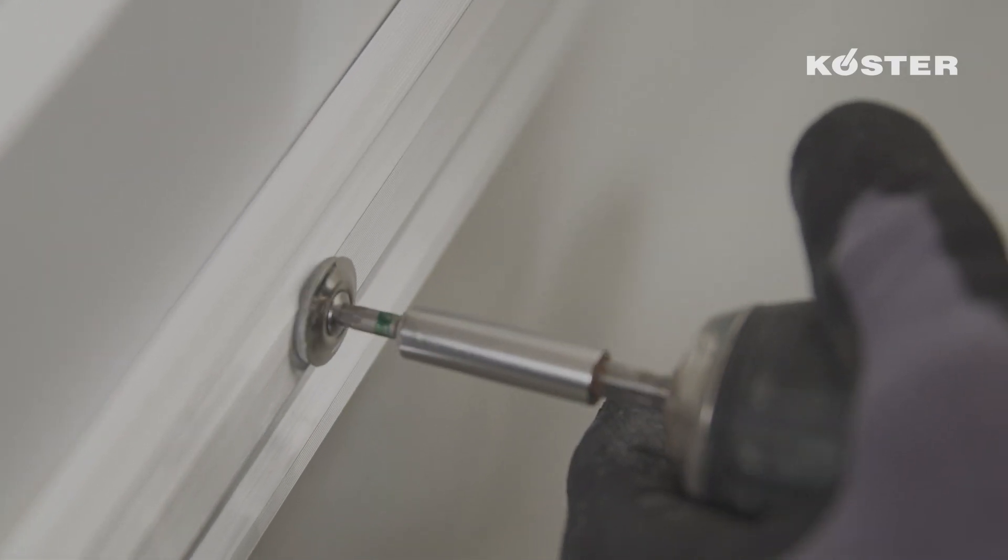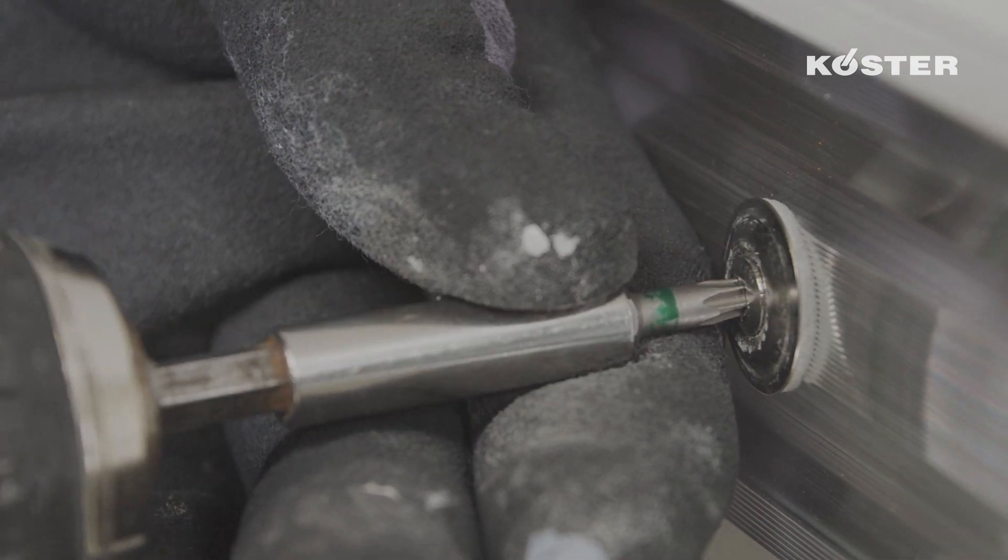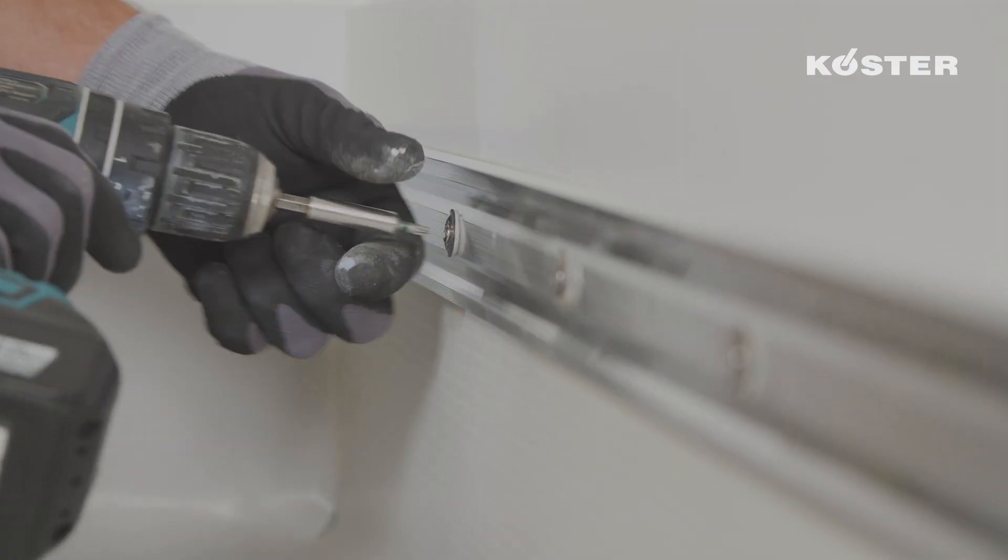A Köster wall connection profile is used to mechanically fix the top edge of the membrane. These are installed with self-sealing stainless steel screws.